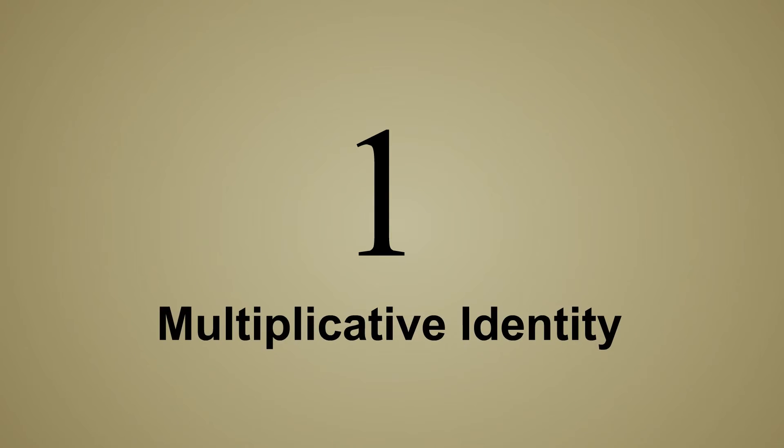One is also a number with a unique identity property. When any number is multiplied by one, its value is unchanged. So, one is known as the multiplicative identity.